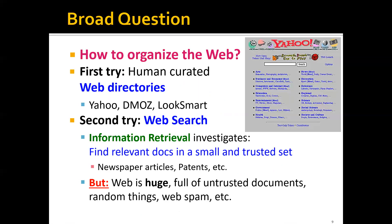One broad question we want to ask is how to organize the web. The first try is to use human-curated web directories. For example, decades ago Yahoo once tried to organize all the web pages in the world using a hierarchy of directories — they would put each web page into one or more directories. For instance, web pages related to art would most probably be included in the directory 'ART'.